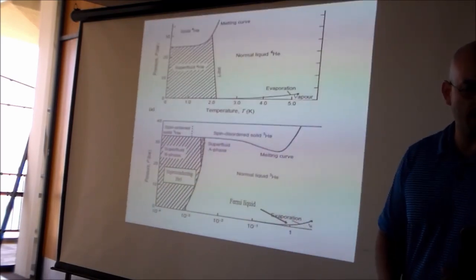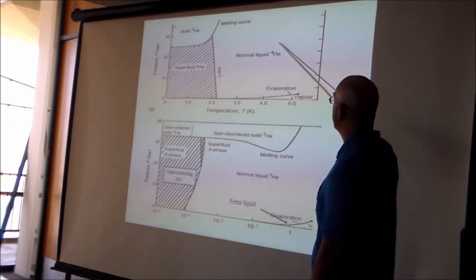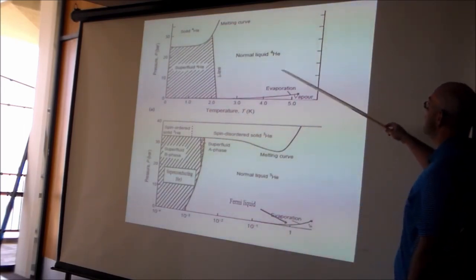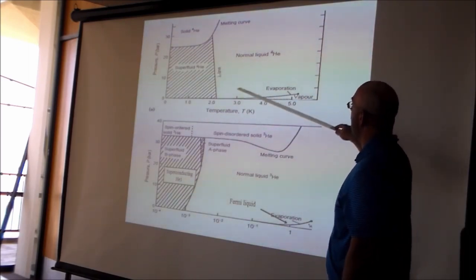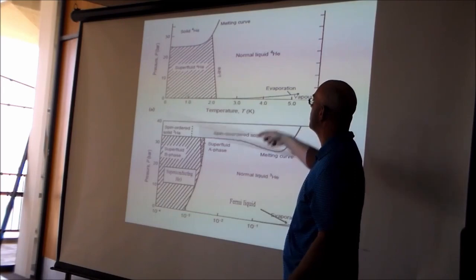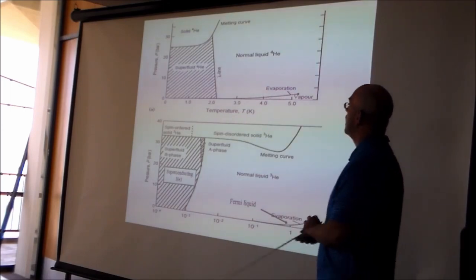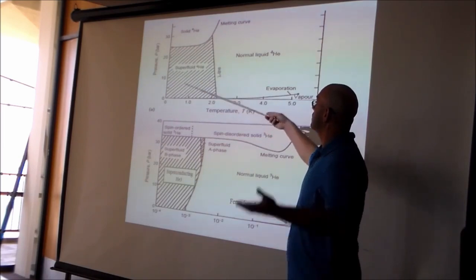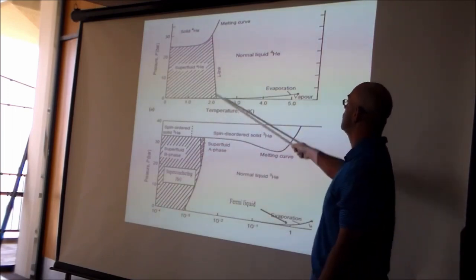This page shows the phase diagrams for helium-4 and helium-3, pressure versus temperature. For helium-4, it is liquid in one region, and once you get below 2.17 Kelvin, it turns into a superfluid. Helium-4 is a boson: when you cool it down sufficiently, it all Bose condenses — all helium-4 moves into the same ground state. This superfluid has no viscosity and is a special state of matter.